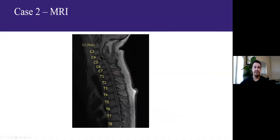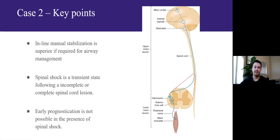The patient's MRI shows canal stenosis and cord compression at C3-4 and C4-5, due to prominent posterior disc-osteophyte complex protrusion with significant posterior ligamentous thickening — consistent with a severe central cord injury with prognosis to be determined, as the patient is currently in spinal shock. Take-home points for Case 2: inline stabilization is superior when managing these airways. Spinal shock is a transient state following an incomplete or complete spinal cord lesion and we cannot prognosticate patients in its presence. Importantly, neurogenic shock and spinal shock can occur simultaneously but should never be used interchangeably — they are completely different entities.